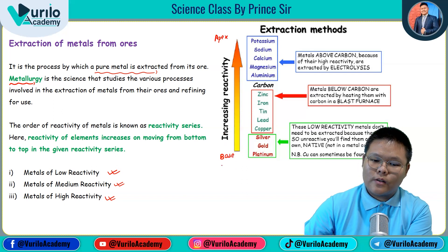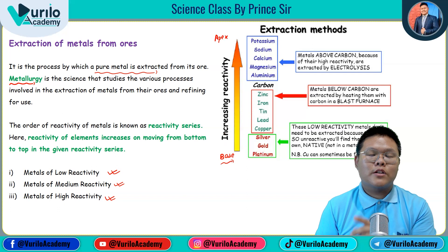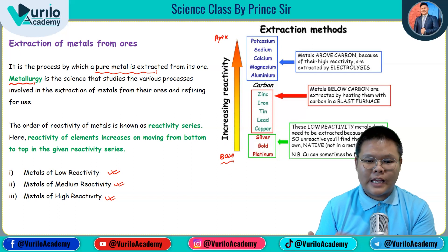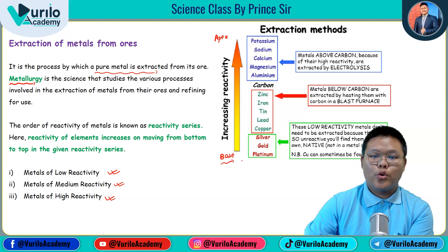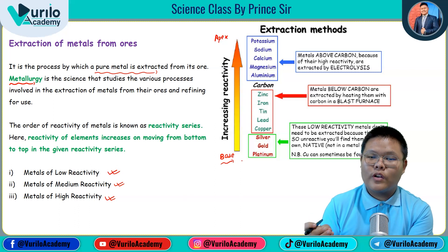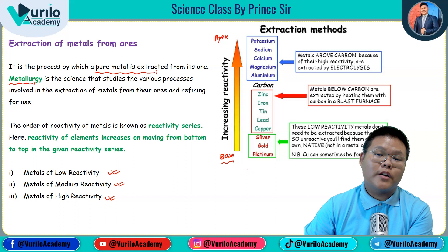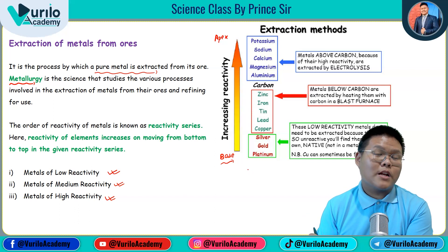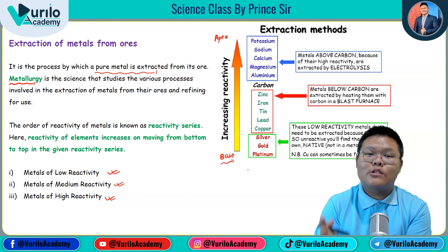Low reactivity metals — examples are silver, gold, and platinum. These metals are of very low reactivity. Important point to remember: if a metal is of low reactivity, then we can extract it.